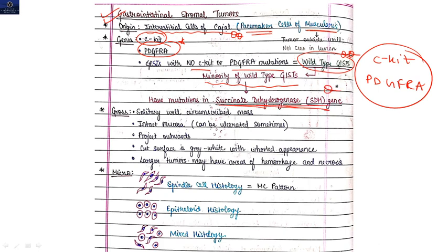So basic origin of the GIST is your interstitial cells of Cajal. Genes which are mutated here: c-KIT and PDGFRA. And there are GISTs which have no mutation in c-KIT or PDGFRA, that will be known as wild-type, but it has a mutation in succinate dehydrogenase.